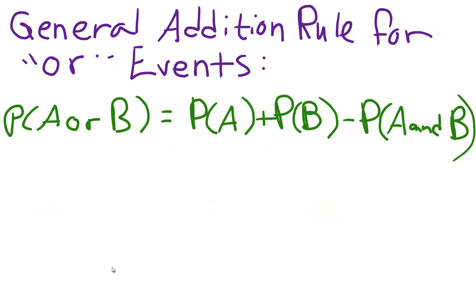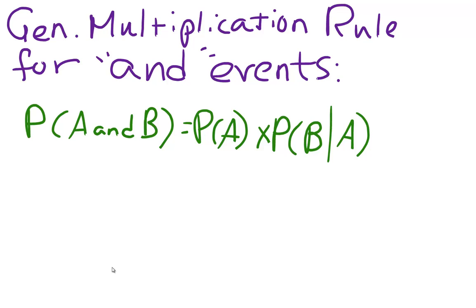The general addition rule for OR events may also be used for non-disjoint events: the probability of A or B equals the probability of A plus the probability of B minus the probability of A and B. The general multiplication rule for AND events can be used for both dependent and independent events: the probability of A and B equals the probability of A times the probability of B given A.